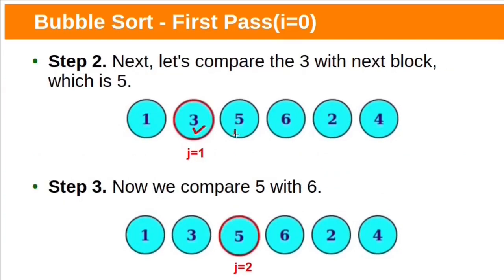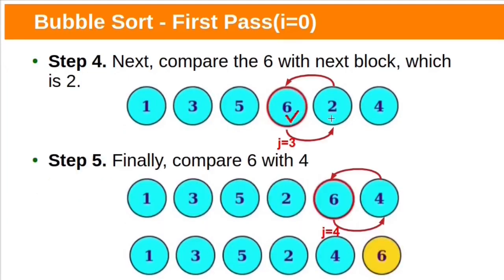Then compare the second block with the third block. Here 3 is not greater than 5, so no swap needed. Again compare the third block with the fourth block — 5 is not greater than 6, so no swap. Now compare the fourth block with the fifth block: 6 is greater than 2, so swap. Finally compare the fifth block with the sixth: 6 is greater than 4, so swap. After completion of this first pass, the bigger block 6 goes to its correct position.